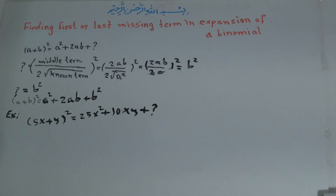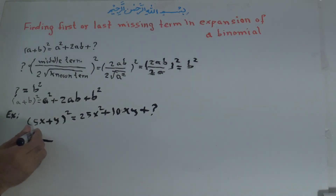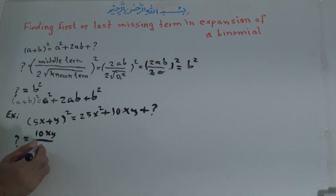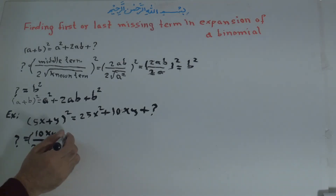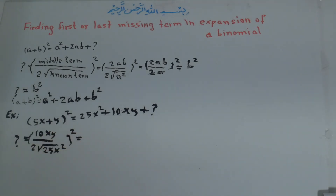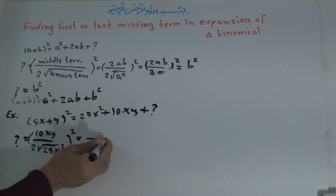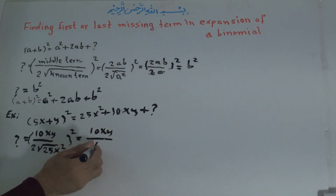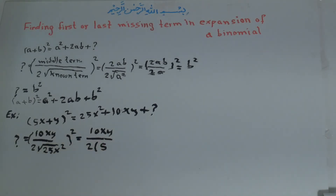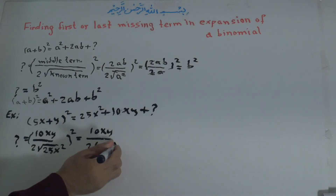Now, the question mark, or the unknown, is equal to 10xy over 2 times the square root of 25x squared, which equals 10xy over 2 times — the square root of 25 is 5, and the square root of x squared is x — all to the power of 2.